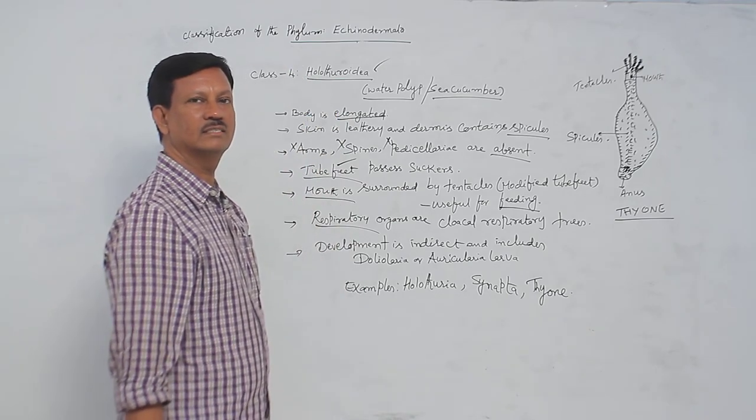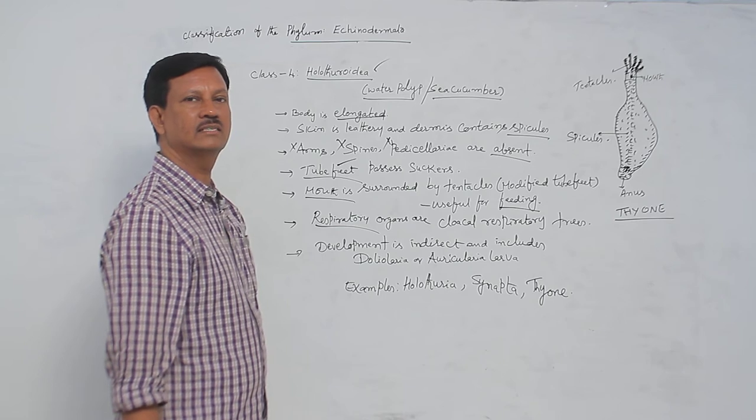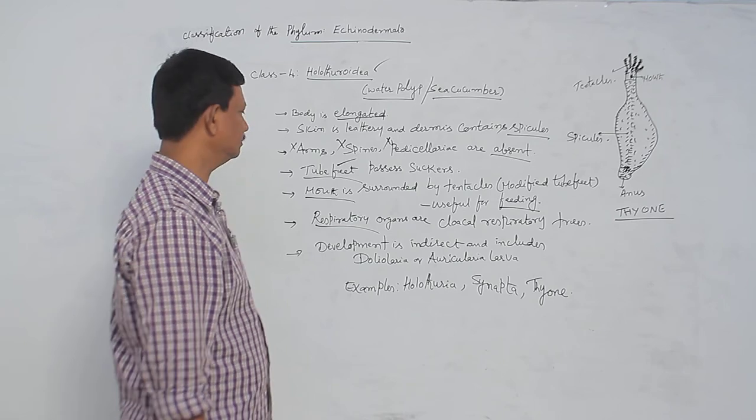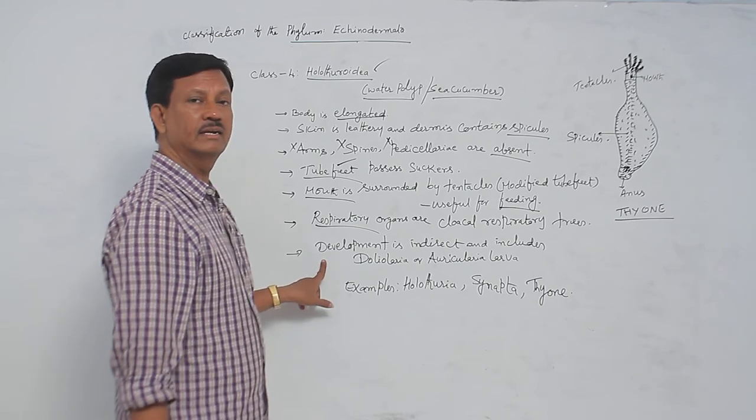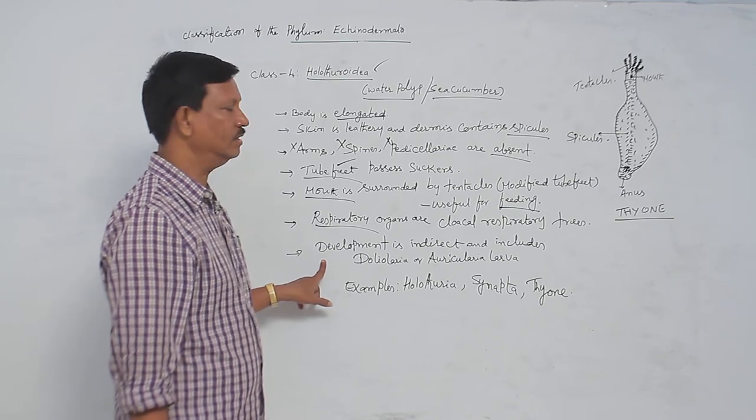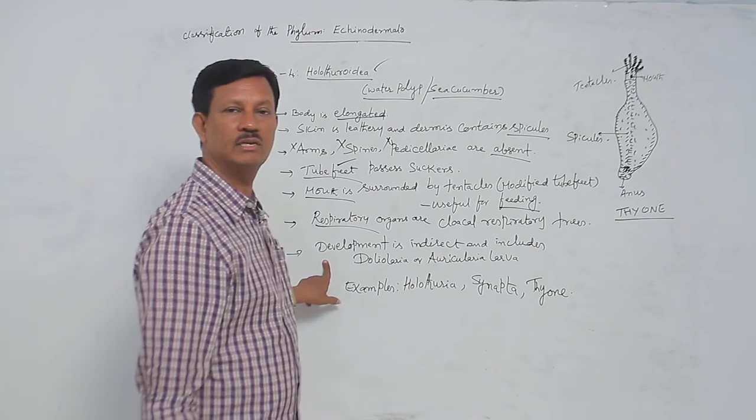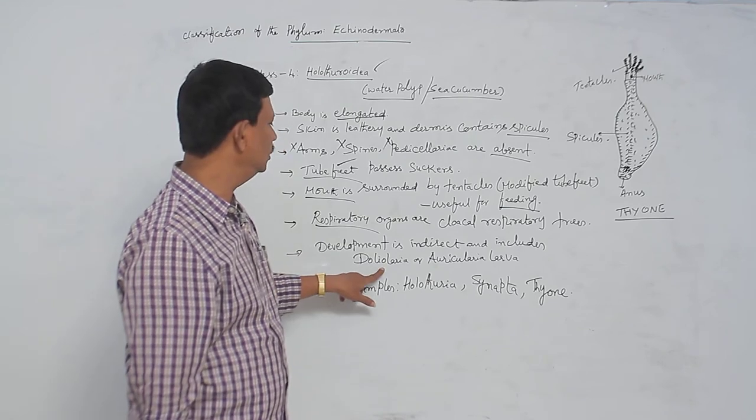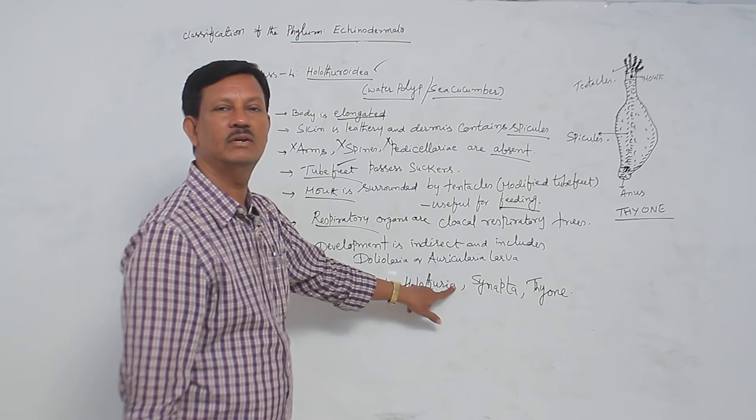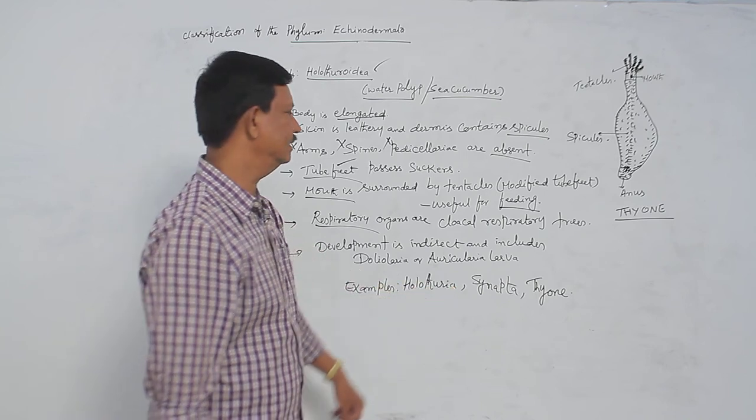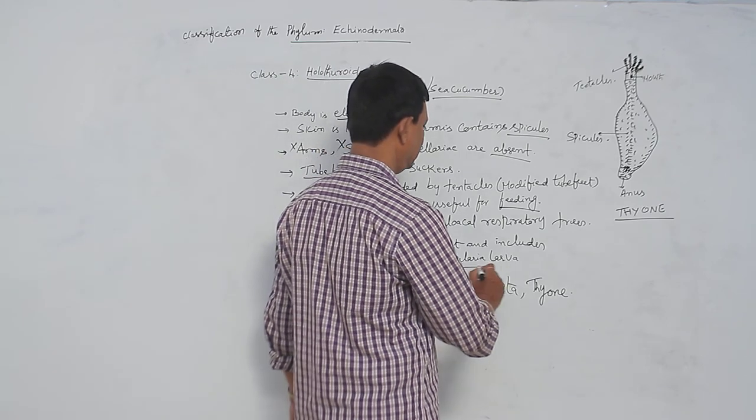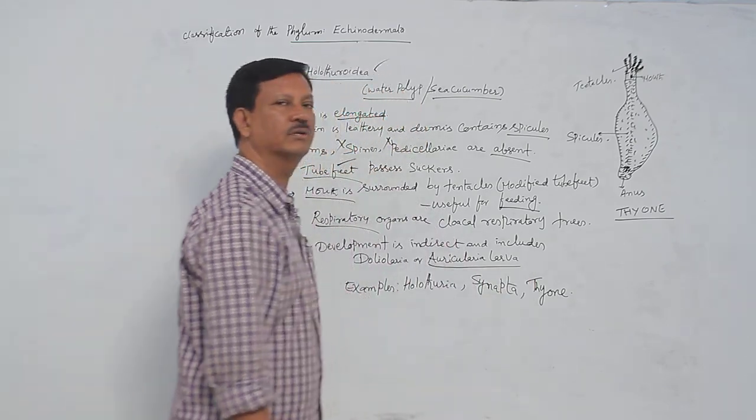With the help of these structures, exchange of gases takes place by diffusion. Development here is also indirect development with the presence of larva. There are two types of larval forms found in this class: one is the doliolaria larva and auricularia larva. This is from an evolutionary point of view. This larva is very important and significant. These animals are gradually evolved into chordates.